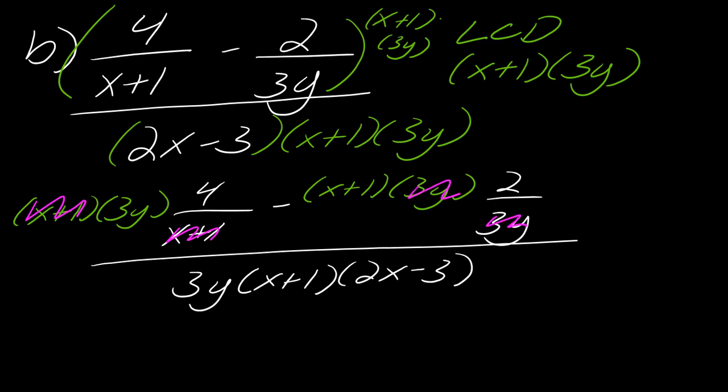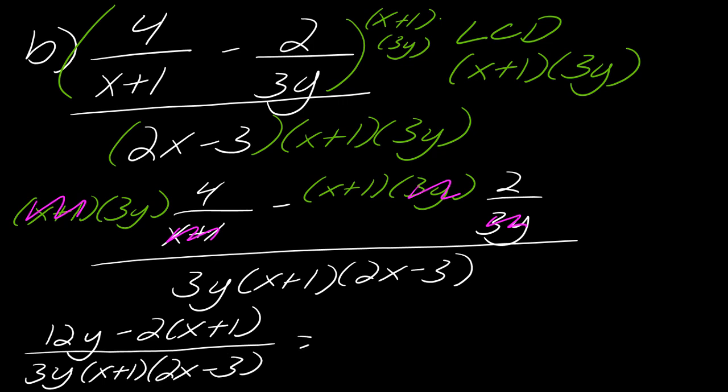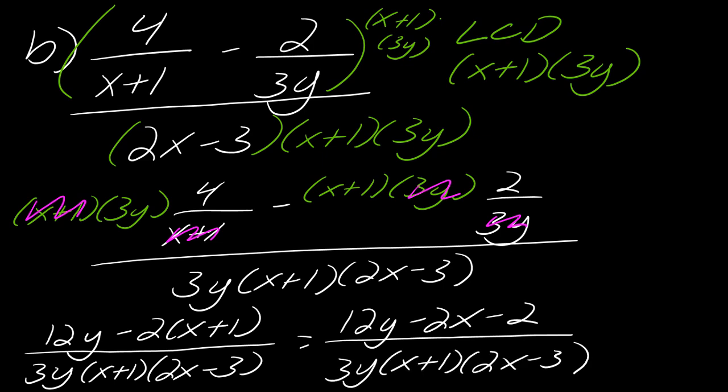So then what you'd be left with, let's see if I can fit this on here. So 12y minus two times x plus one over three y x plus one, two x minus three. And then I guess I could simplify this whole thing really as 12y minus two x minus two over three y times x plus one times two x minus three.